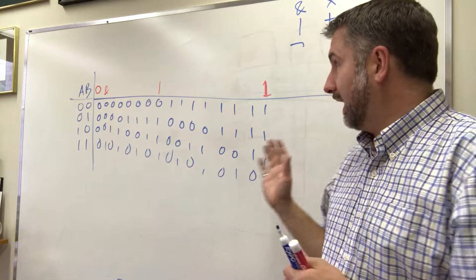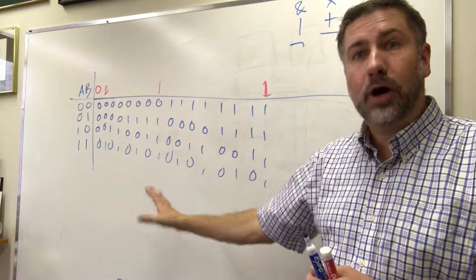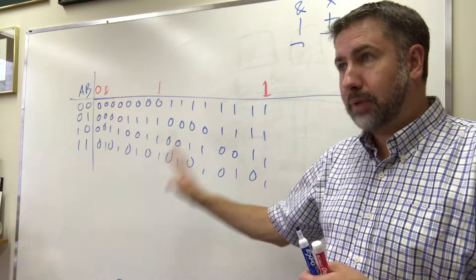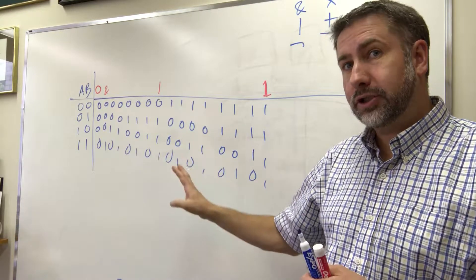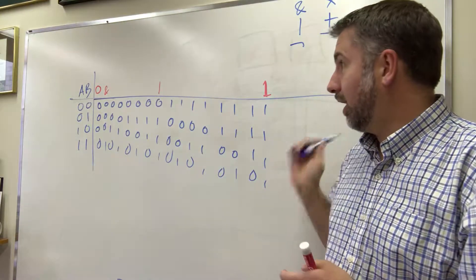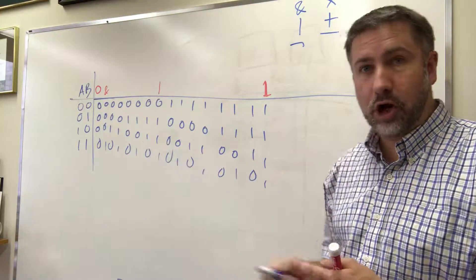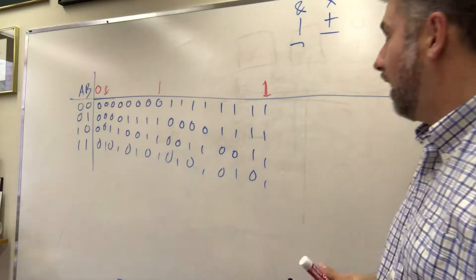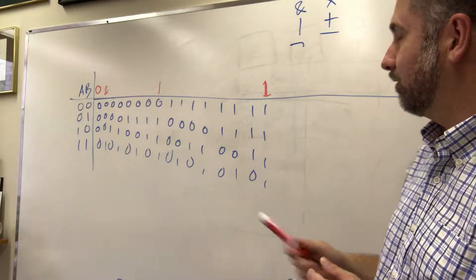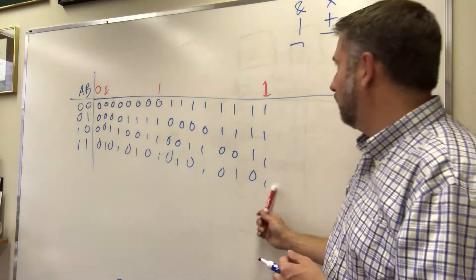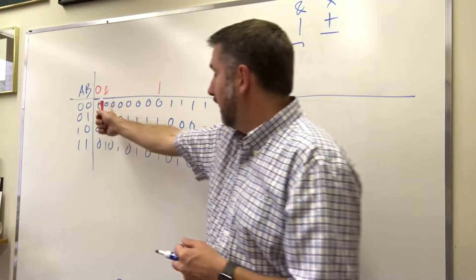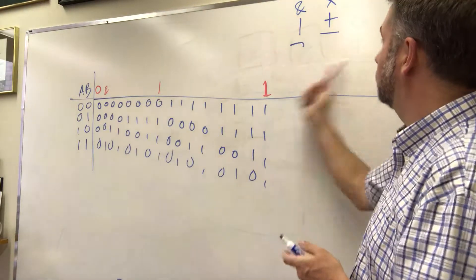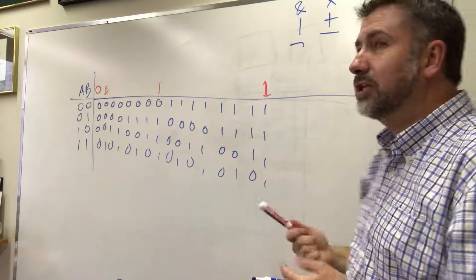In the last video we were looking at the 16 possible functions for a binary function of two variables. These are them — this is all there is. We've already looked at the fact that we've got a zero function, a one function, an AND function, and an OR function. Those are the ones that we've seen so far.